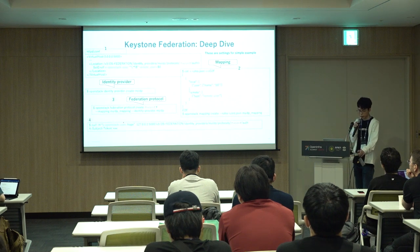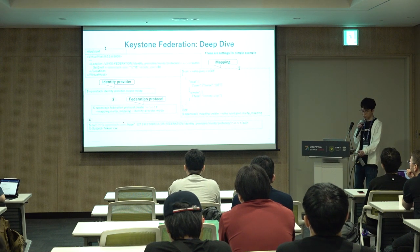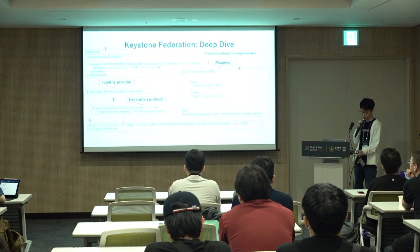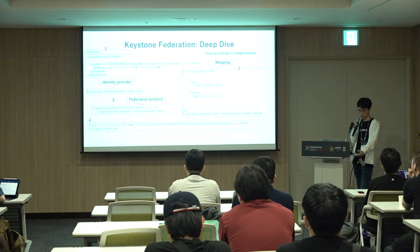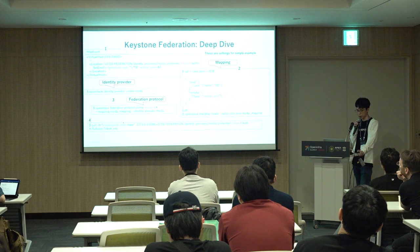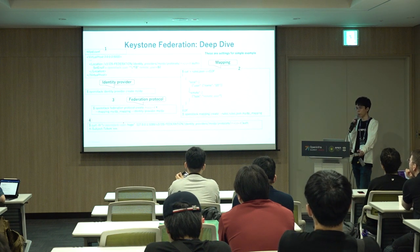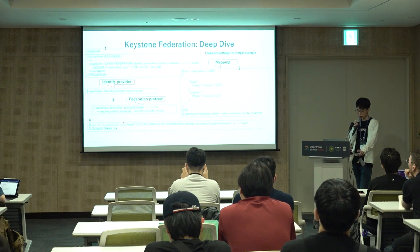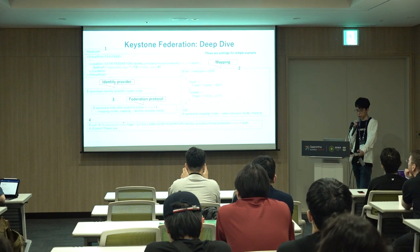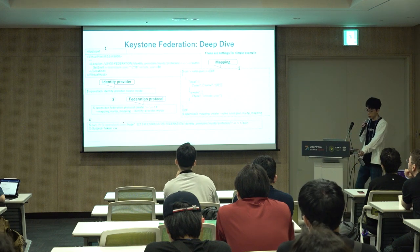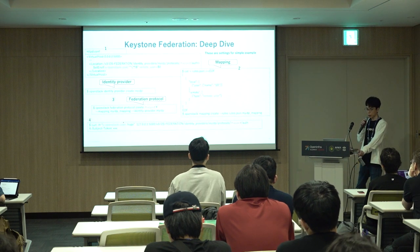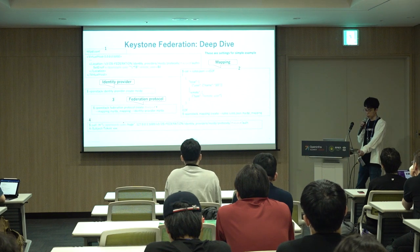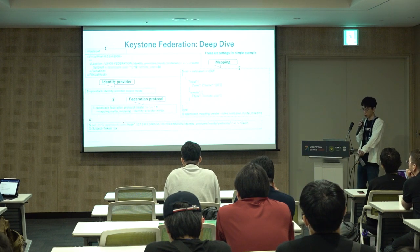Now let's look at more concrete examples. Keystone federation is simple and highly extensible. The setup for Keystone federation is small enough to fit on one slide. Most of the configuration and dependency of the federation protocol is outside of Keystone. In this example, for simplicity, there is no identity provider, but this example helps us focus on the basic behavior of Keystone federation. I used an HTTP header, assuming authentication information is provided from the identity provider.